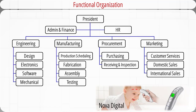This diagram is an example of a project that develops a new type of medical forehead thermometer in a hypothetical company called Nova Digital. At the top of this organization is the president. Two supporting offices are human resources and finance and administration. There are four divisions: engineering, manufacturing, procurement, and marketing.